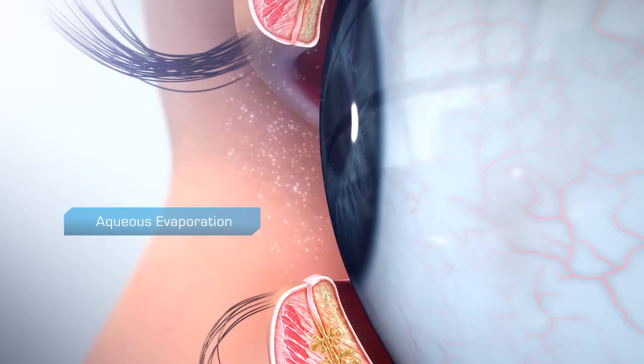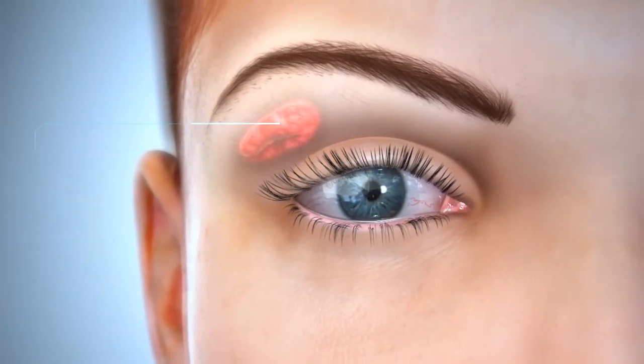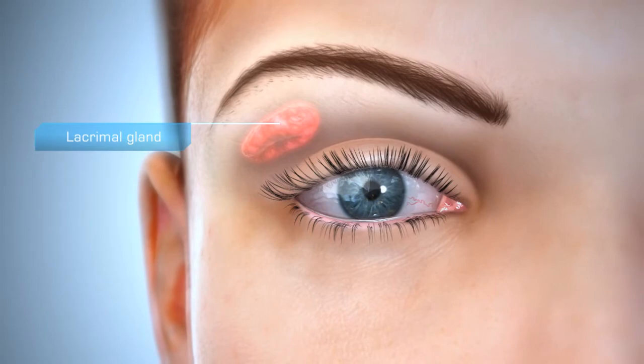Excessive evaporation of tears can stimulate overproduction of the aqueous component. This chronic overproduction of aqueous may be linked to eventual inflammation of the lacrimal gland.